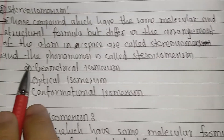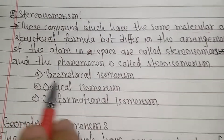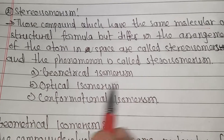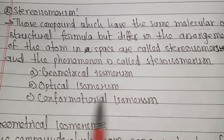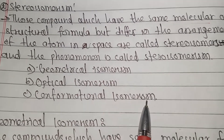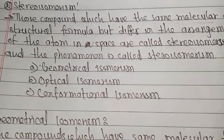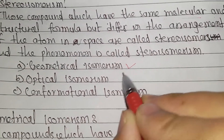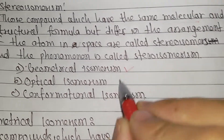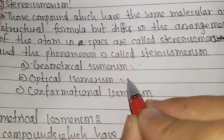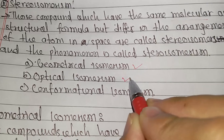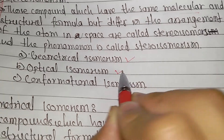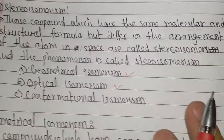There are mainly three types of stereoisomerism: geometrical isomerism, optical isomerism, and conformational isomerism. Generally, we focus on two types: geometrical isomerism and optical isomerism.